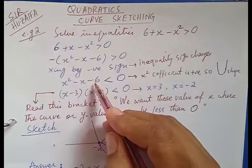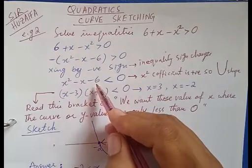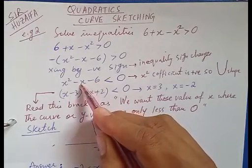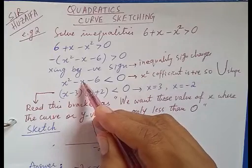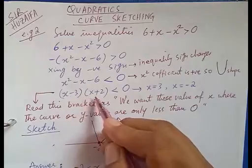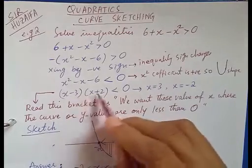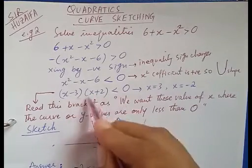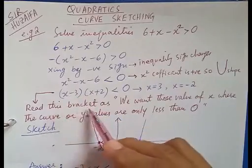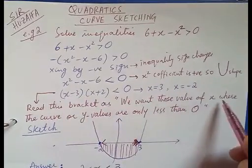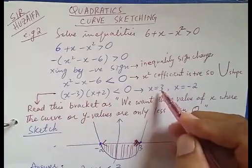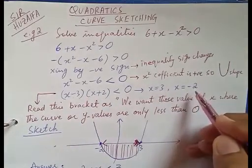Using the same method of factorization, we need two numbers where multiplying gives minus six and adding or subtracting gives minus one. We get two brackets: (x minus three) and (x plus two). These two brackets are less than zero. One value of x is three and the second value is minus two.